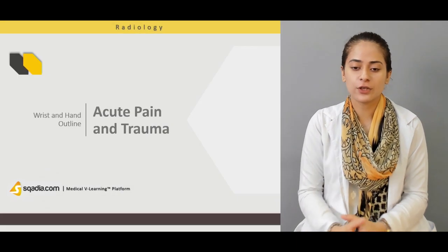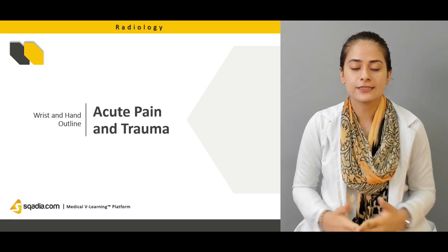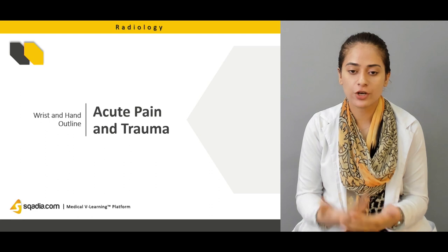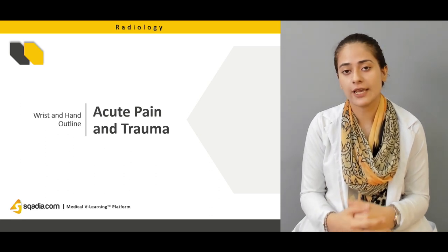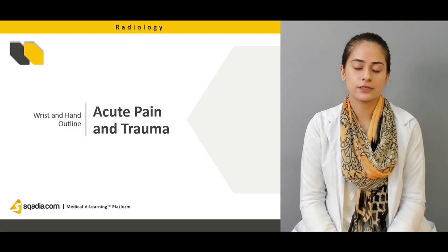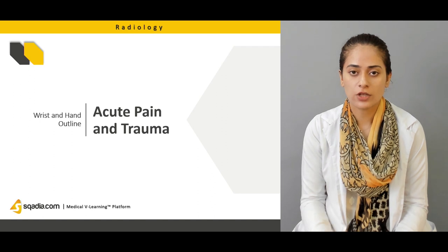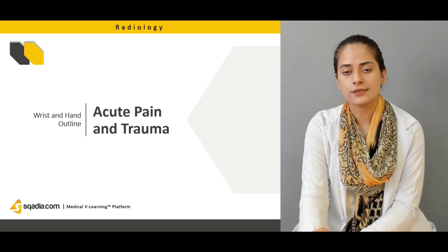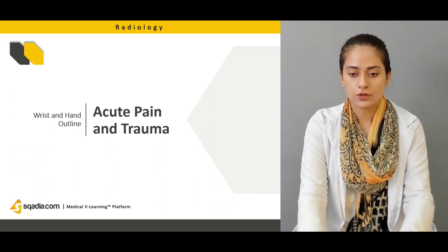First we'll talk about acute pain and trauma. We'll discuss different types of conditions which are a result of some trauma or acute condition — any fall or injury that results in fractures or abrupt consequences. These are all acute conditions. We'll also discuss some chronic conditions. But first, let's focus on the acute conditions.